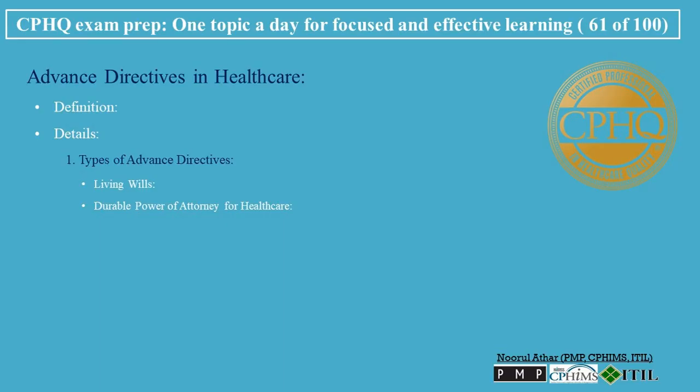Durable Power of Attorney for Healthcare: This document designates a trusted person, often a family member or close friend, to make healthcare decisions on behalf of the individual, should they become unable to do so.